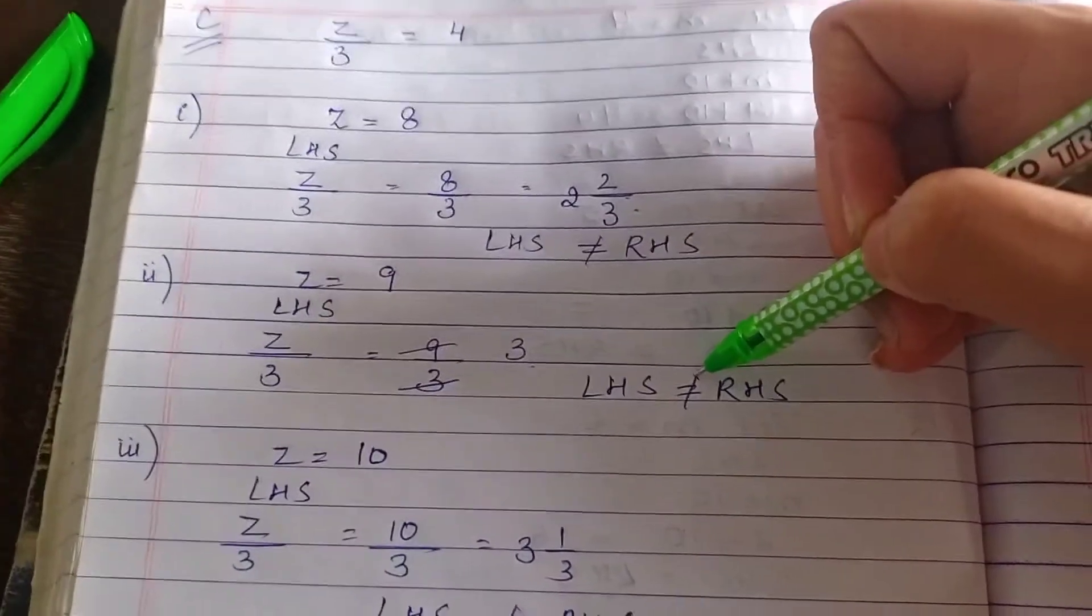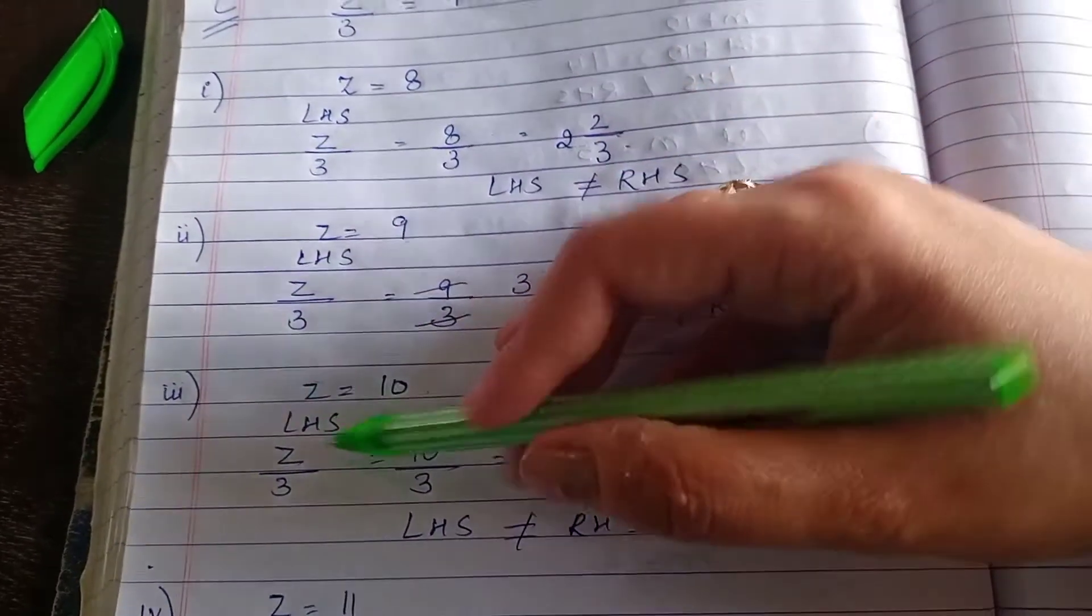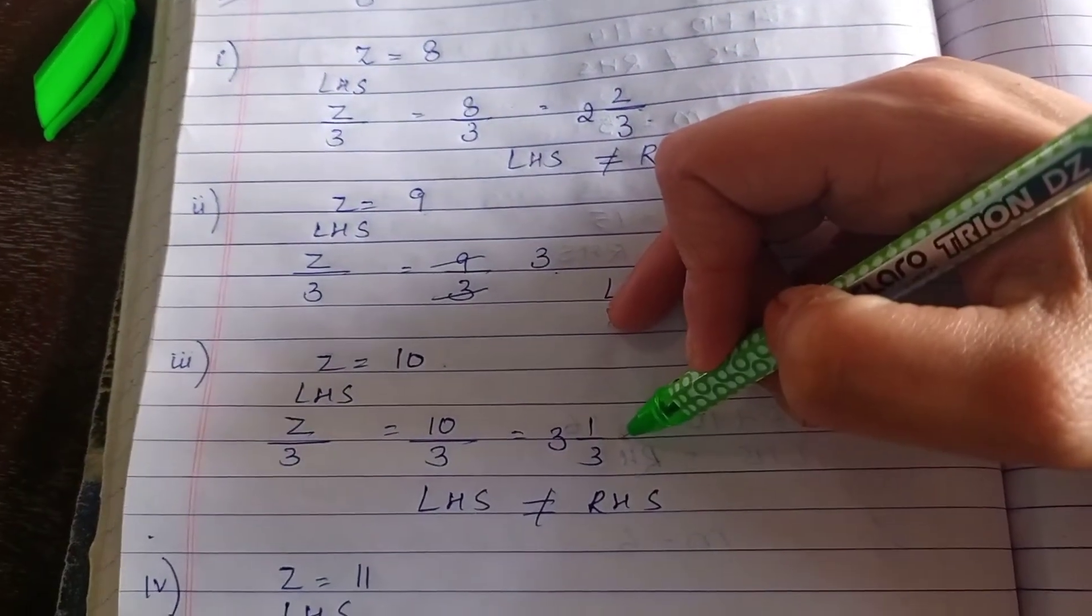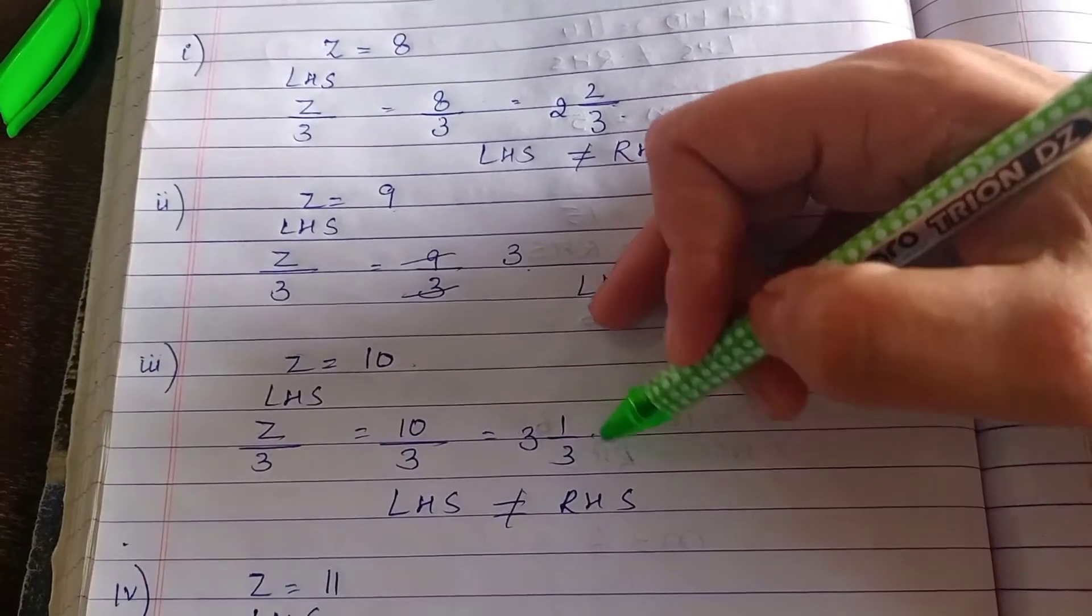Then third, 10 divided by 3. Again, we have an improper fraction. We convert it into mixed form: 3 and 1/3. Again, it is not equal.